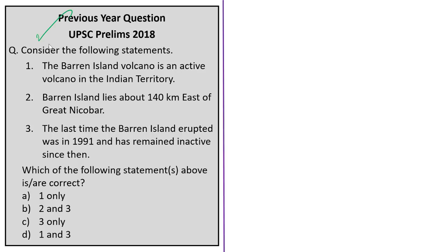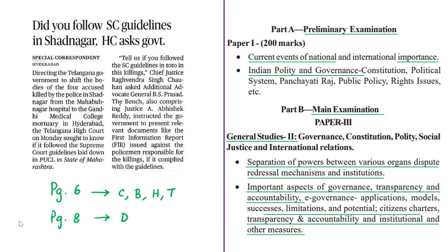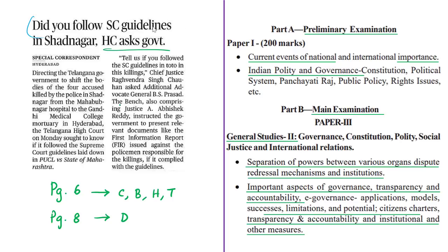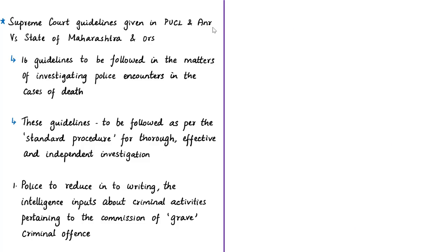The next article discusses an important question asked by the Telangana High Court to the Telangana government — whether the government followed Supreme Court guidelines in the alleged encounter killing of four persons accused of sexual assault and murder of a young woman. These guidelines were given by the Supreme Court in the case PUCL (People's Union for Civil Liberties) and Another versus State of Maharashtra and Others. The Supreme Court issued 16 requirements to be followed as standard procedure for investigating alleged encounter deaths.